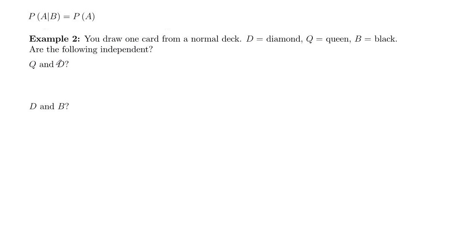So queen and diamond. Remember, here's our definition of independence. Probability of A given B has to be the same as probability of A. Second event has no effect. So we want to check and see is the probability of a queen given a diamond the same as just the probability of drawing a queen?